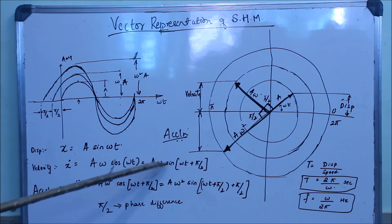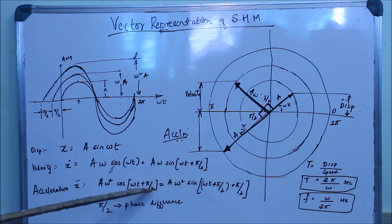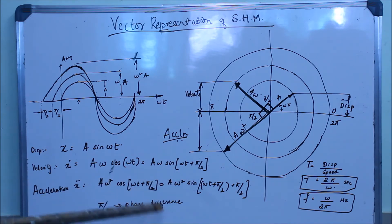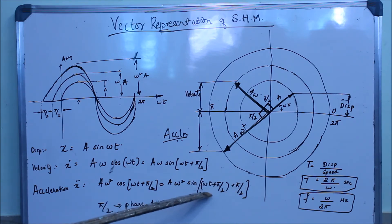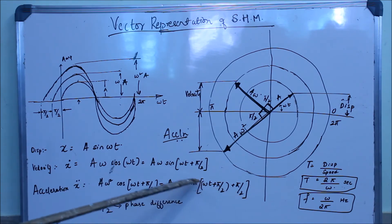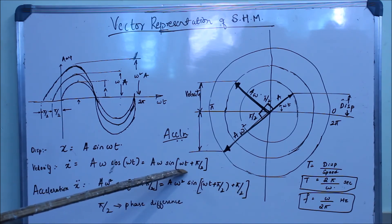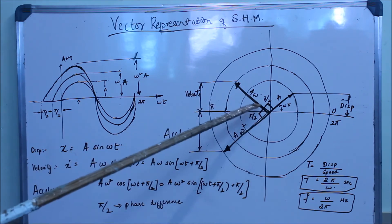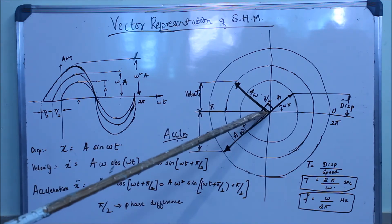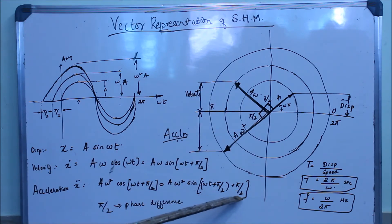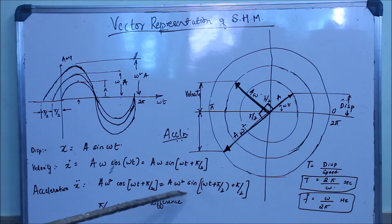For the acceleration vector, differentiate the velocity equation again. You get ẍ = Aω² cos(ωt + π/2). Again replacing cos(ωt + π/2) with sin(π/2 + (ωt + π/2)), the acceleration vector has a phase difference of π/2 with respect to the velocity vector. Adding π/2 + π/2 gives π.